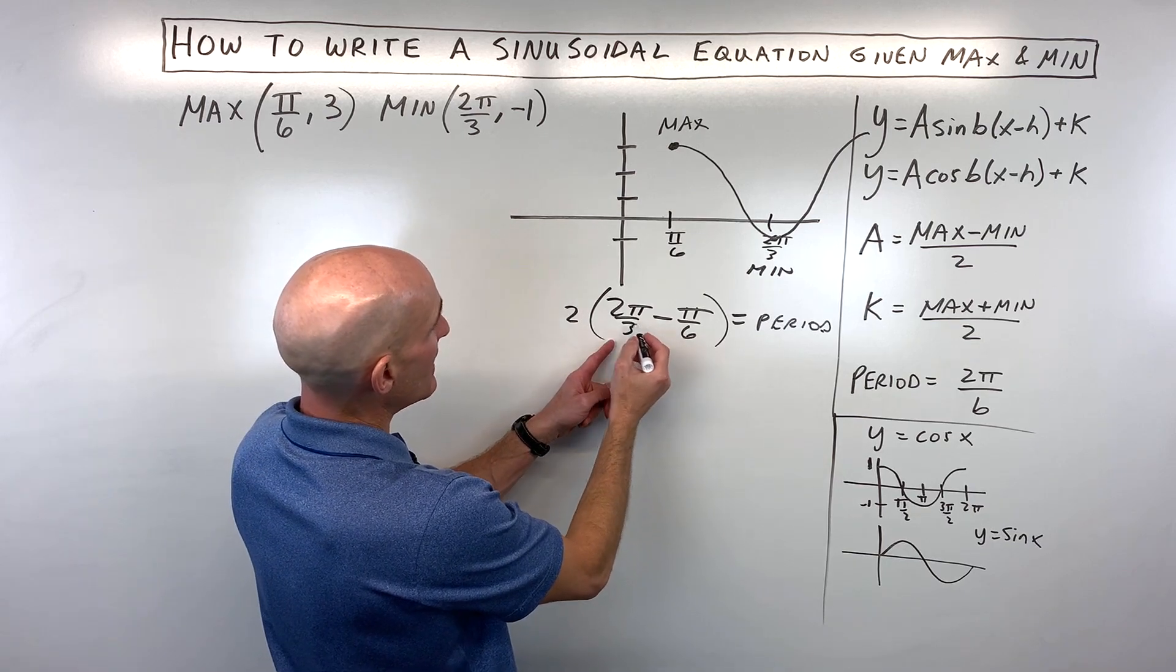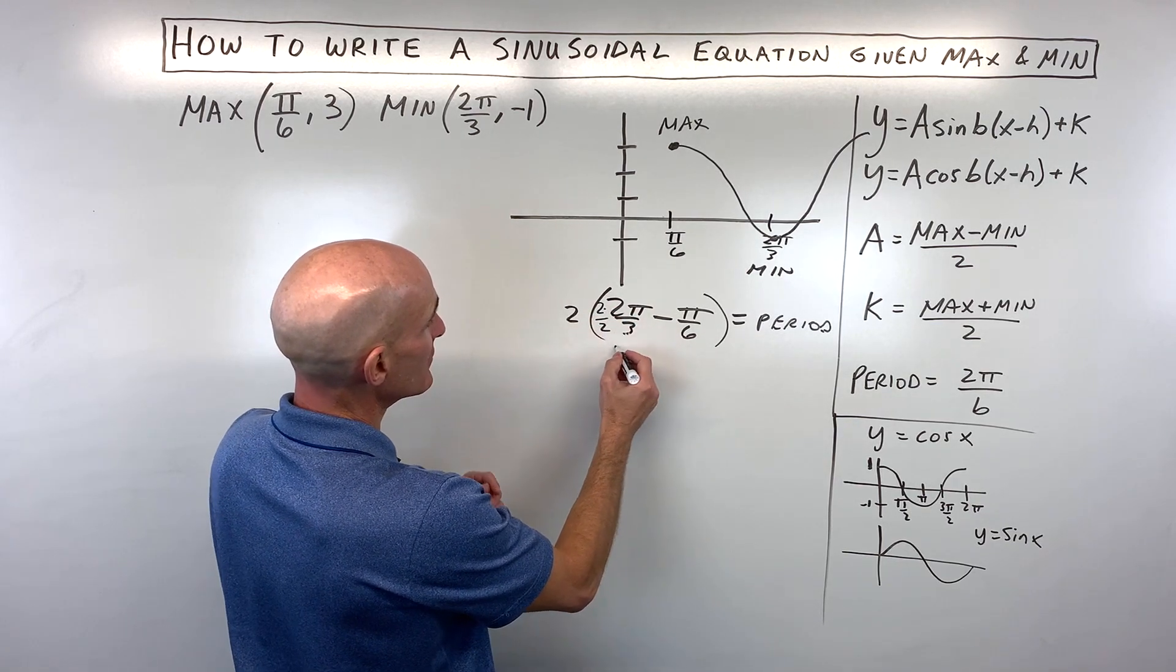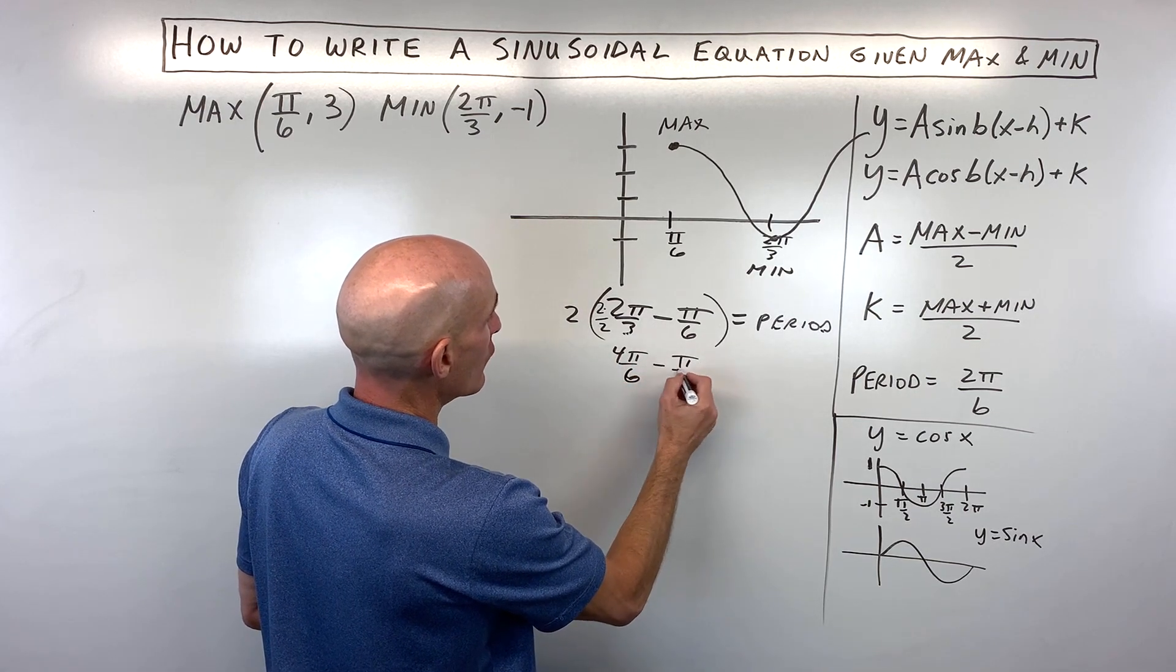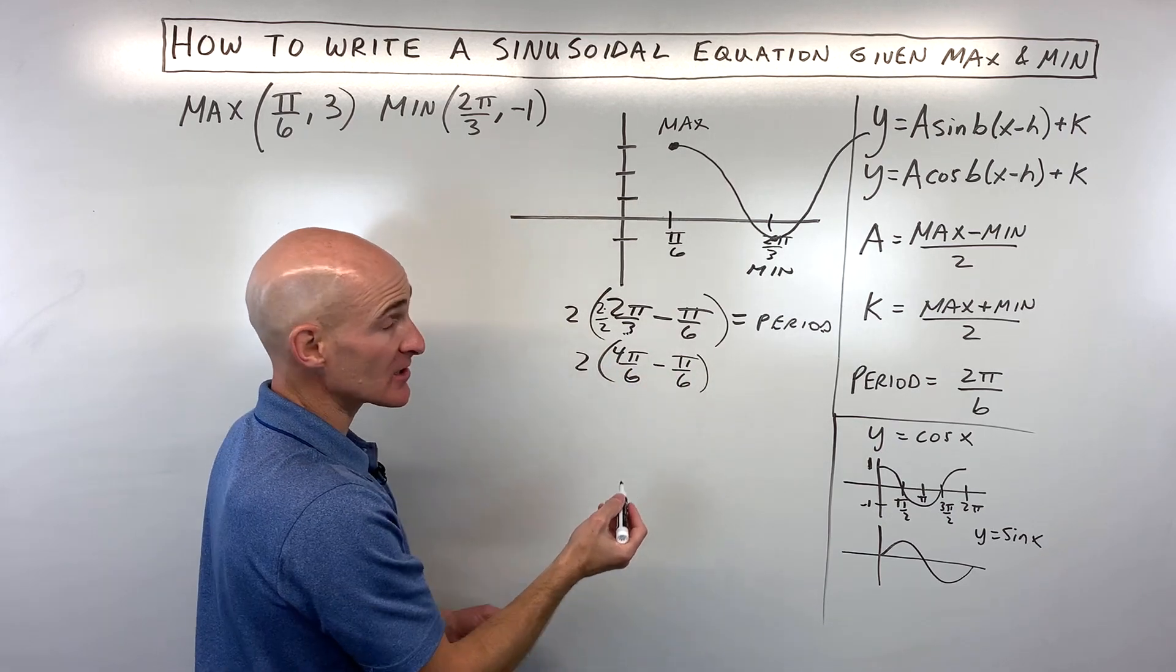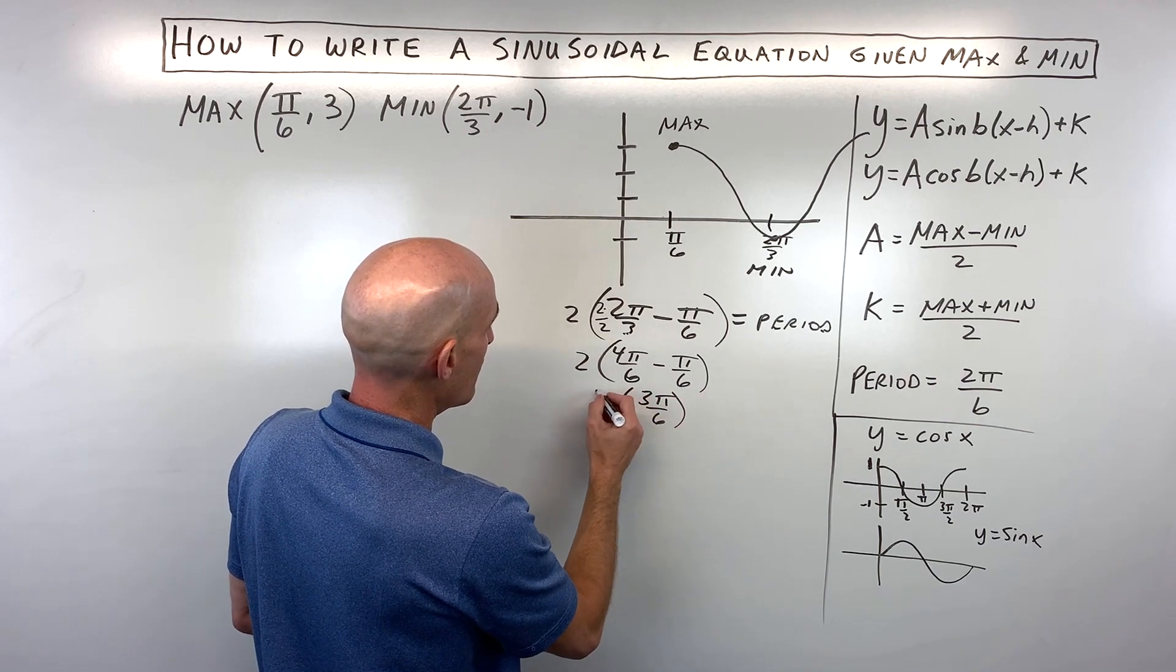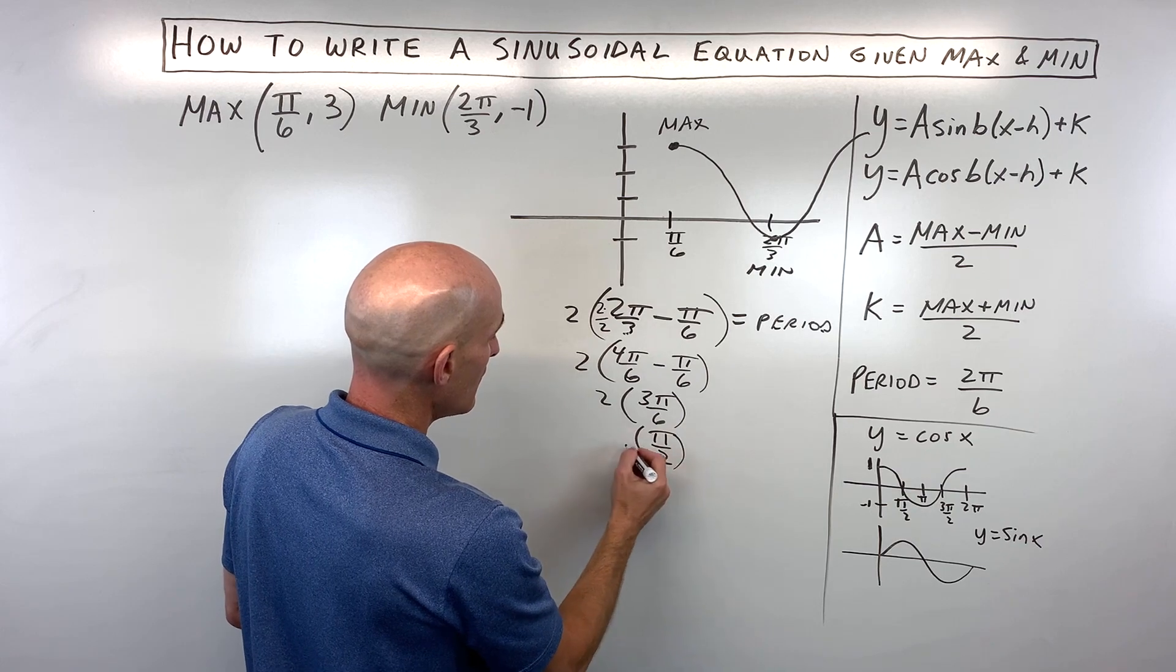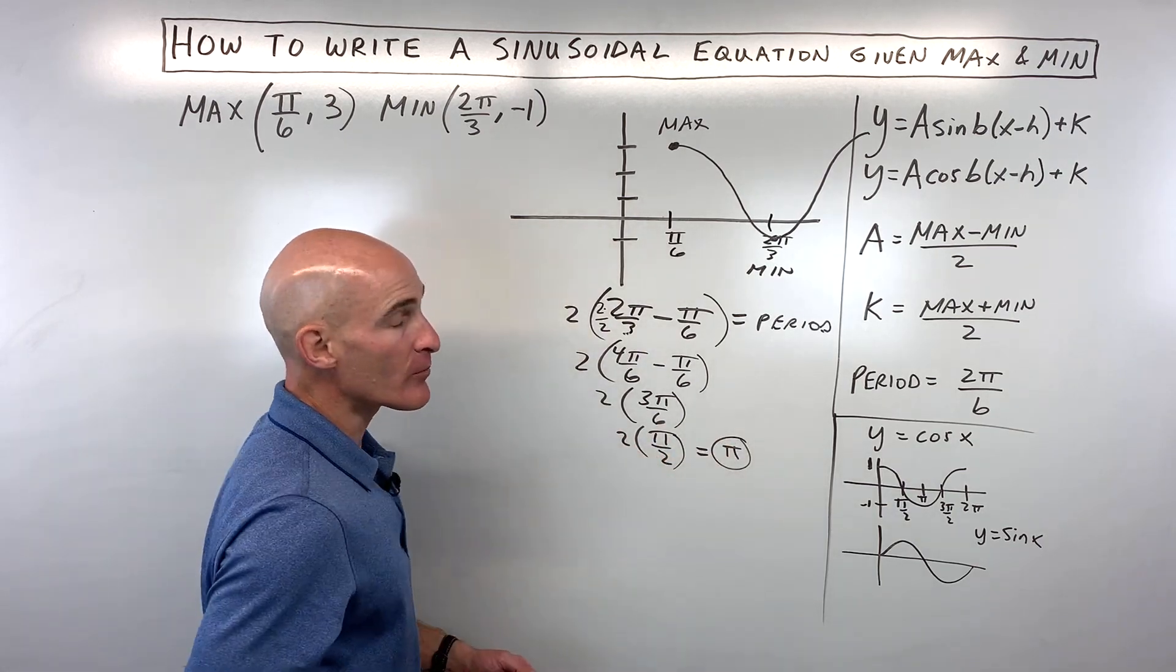So let's go ahead and get common denominators. I'm going to multiply the top here by 2 and the bottom by 2, so that will give us 4 pi over 6 minus 1 pi over 6, which is 3 pi over 6. And 3 pi over 6 is the same as pi over 2, and then times 2 is equal to pi. So now we know what our period is, is pi.